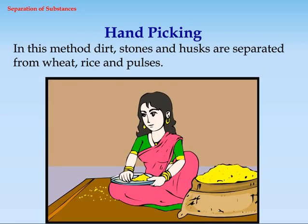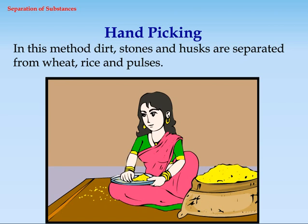Hand-picking. In this method, dirt, stones, and husks are separated from wheat, rice, and pulses.